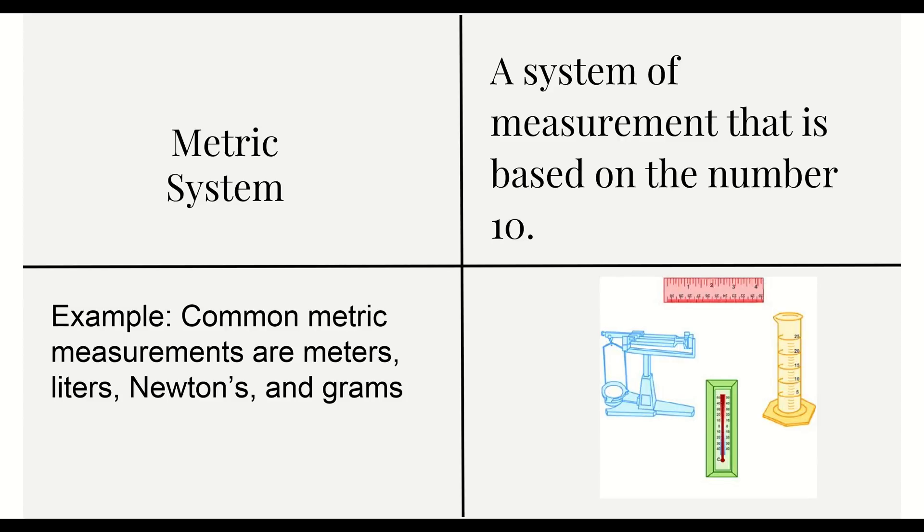Our example here are just some common metric units that we might be measuring. Common metric measurements are meters, liters, newtons, and grams. Meters is for length, liters is for volume, newtons will be for weight, and grams will be for mass. Those are the big four things that we're measuring, but we'll talk about a few others as well.